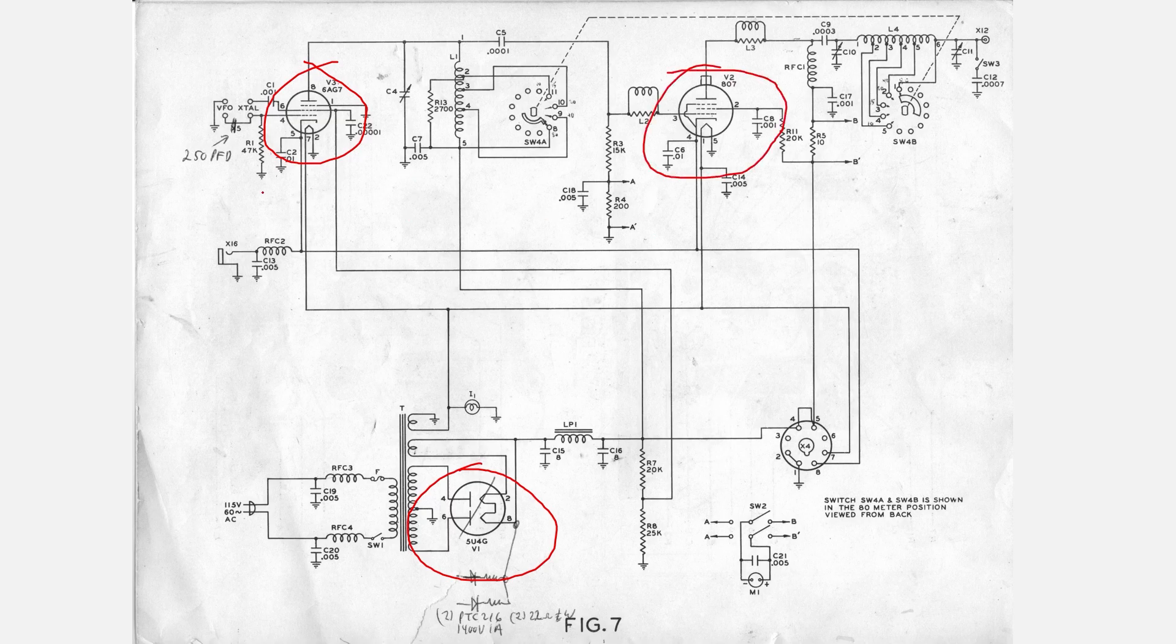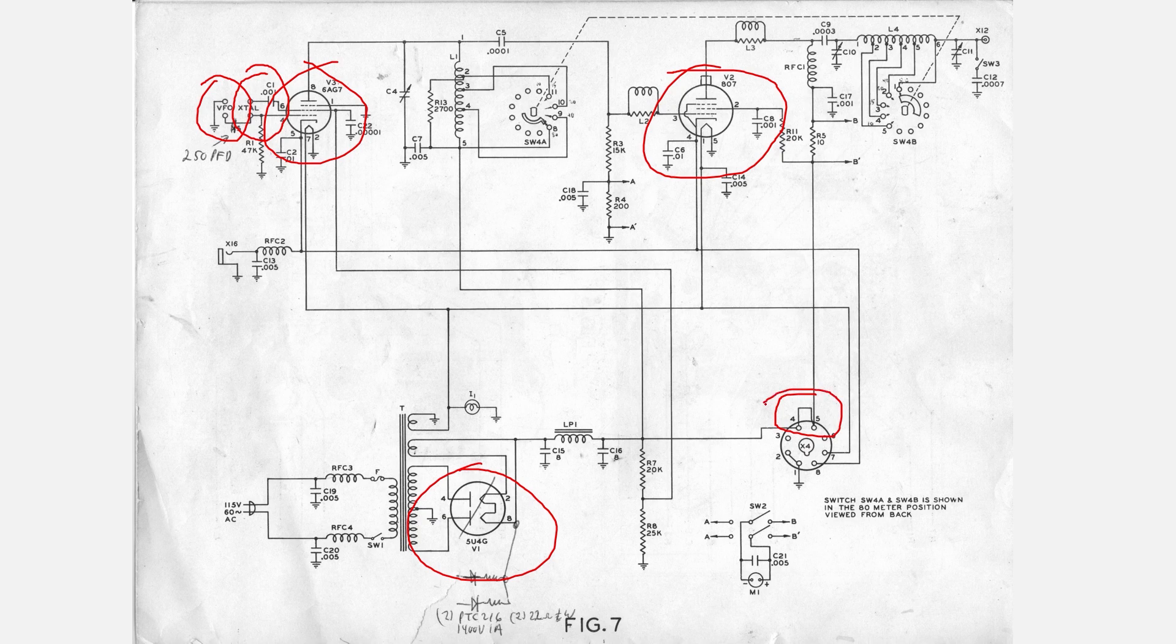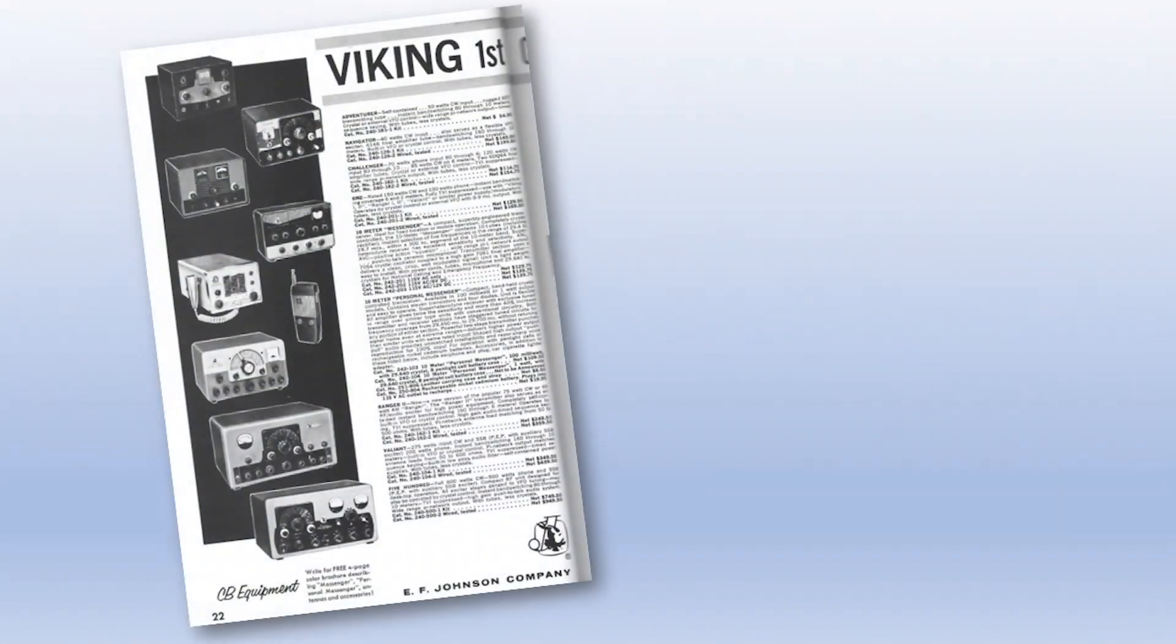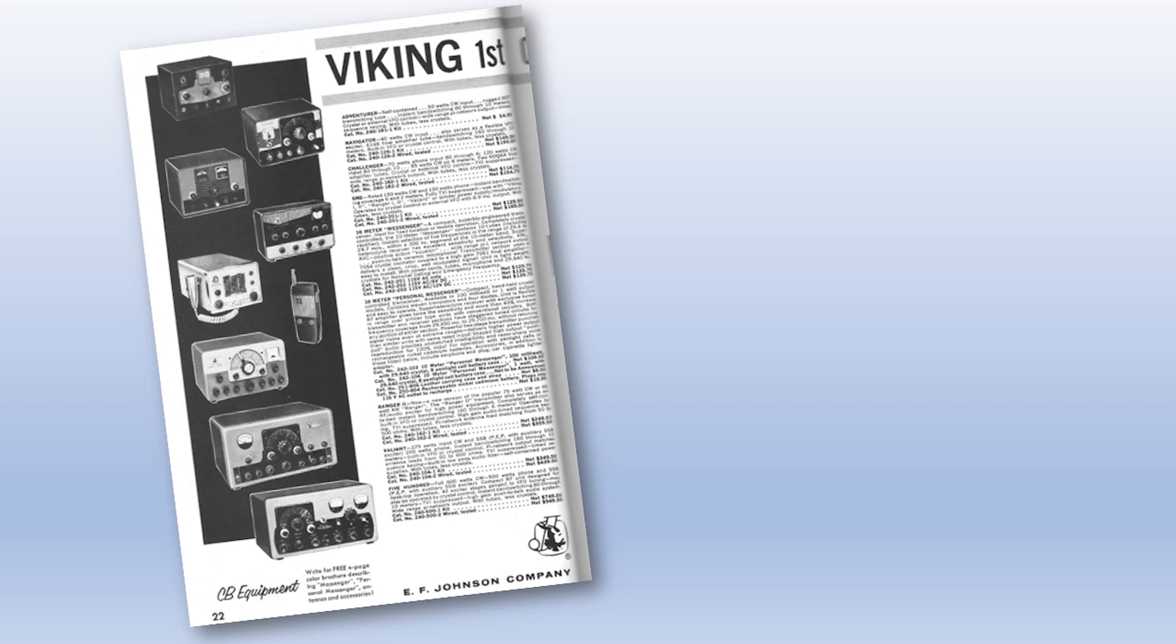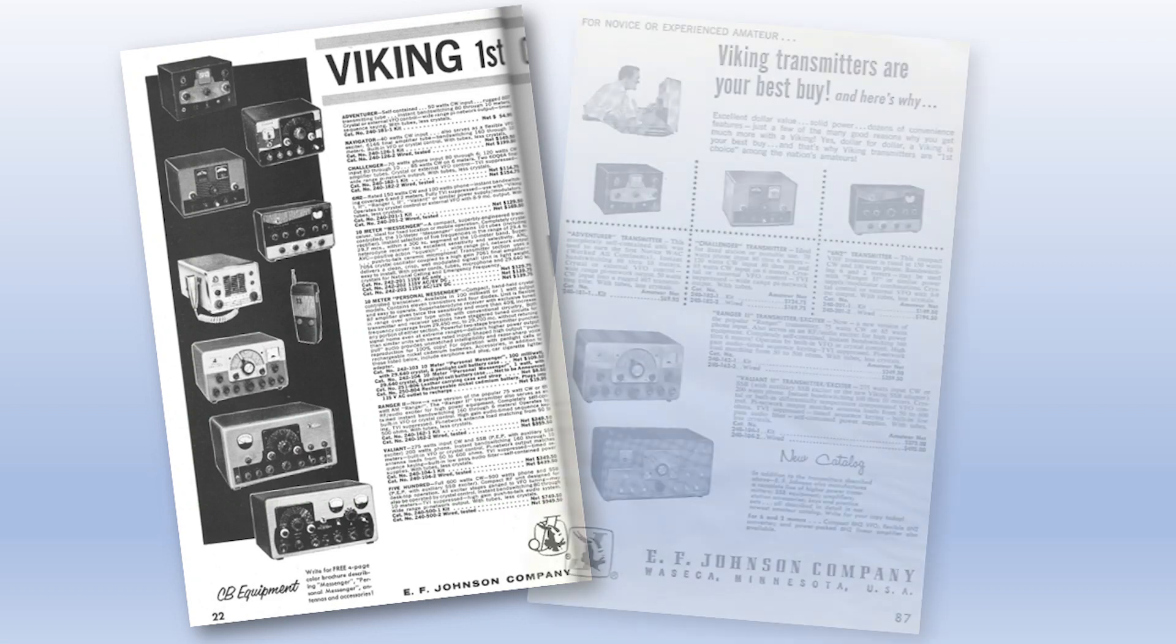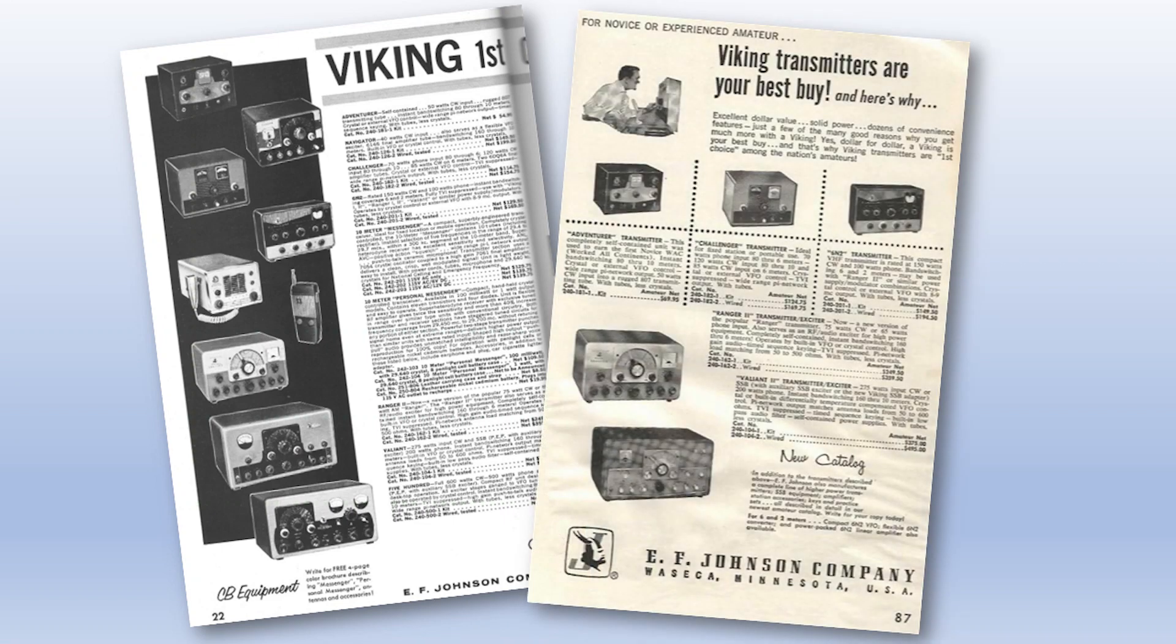Because it was intended for use by the novice class license market of that era, by itself it was capable of only CW operation, and it required external plug-in crystals to set the transmission frequency. Higher class operators could plug in an external VFO instead of crystals, and plug in an external modulator to enable AM voice operation. I couldn't find when the Adventurer went out of production, but because all tube gear eventually succumbed to solid-state competition, I would guess it didn't survive past the 1960s.